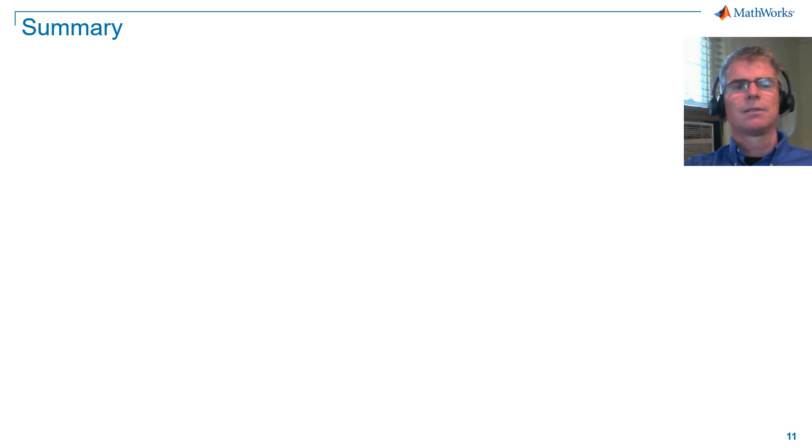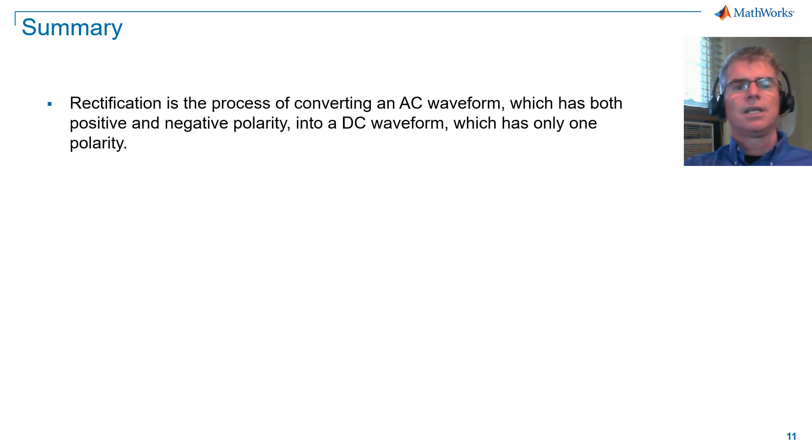In summary, rectification is the process of converting an AC waveform, which has both positive and negative polarity, into a DC waveform, which has only one polarity.